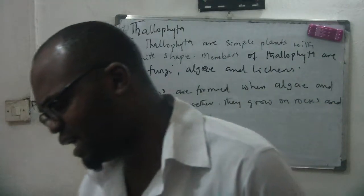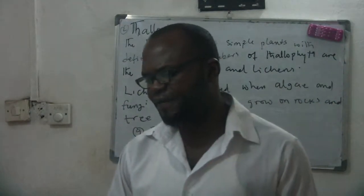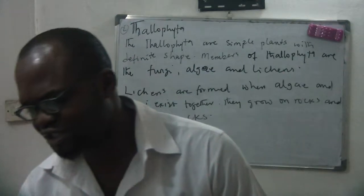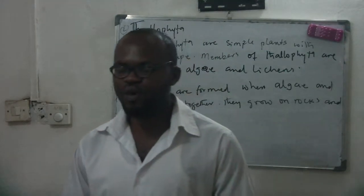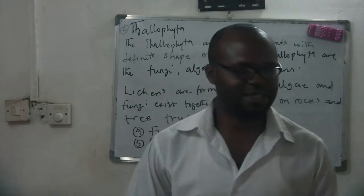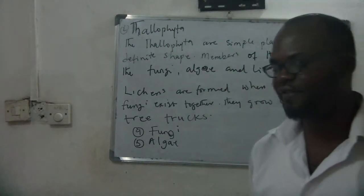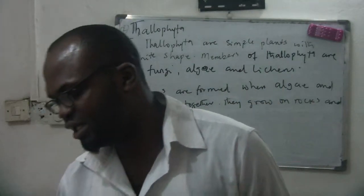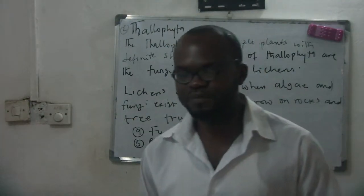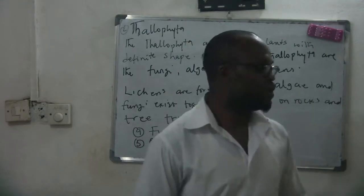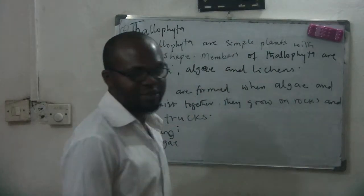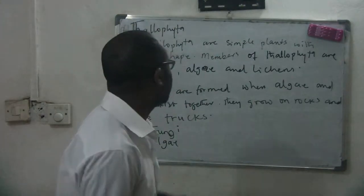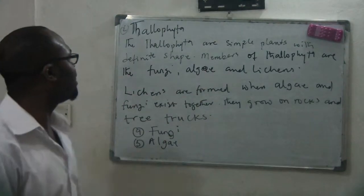After the phylum, we talk about the classes, the family, the genus, and the species. In the same way, after the plant kingdom, we have the divisions. Under the divisions, we talked about the schizophyta in the previous class. And today we are going to talk about the Talofaita.